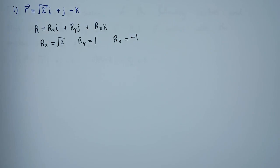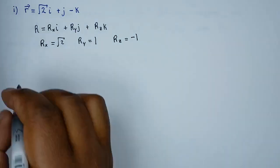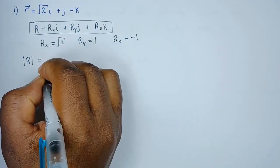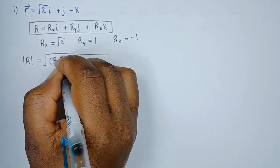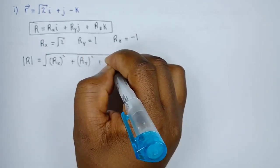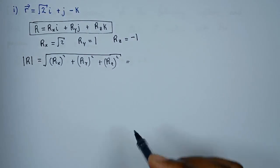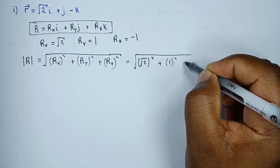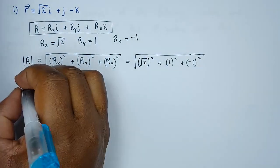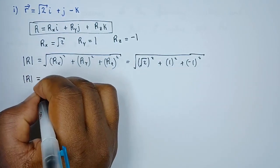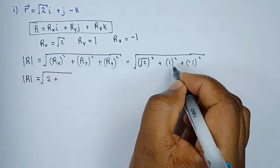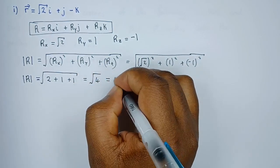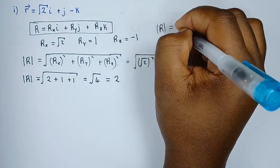From there we're going to find the magnitude of r. Finding the magnitude of r — the r we're talking about is this one. So the magnitude of r will be given by the square root of r_x² + r_y² + r_z². So r_x is √2, so √2 squared plus 1 squared plus (−1) squared. √2 squared is 2, 1 squared is 1, (−1) squared is 1, giving us the square root of 4, which equals 2.